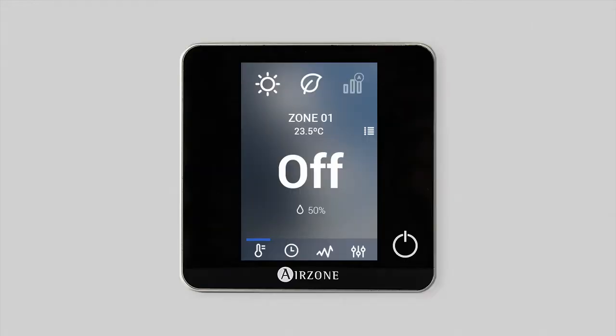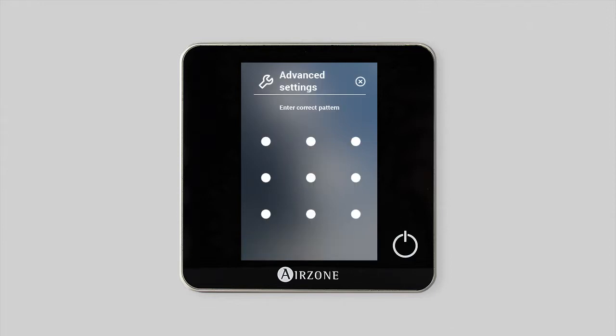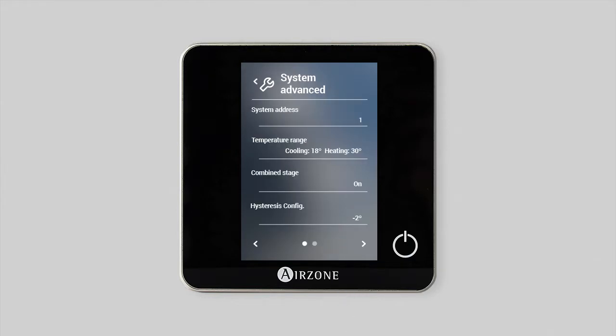Proportionality: the air zone system offers the possibility of controlling the gradual opening of the dampers in order to offer more gentle variation in the airflow supply. This option is accessed from the system advanced settings menu on the master blue face thermostat.